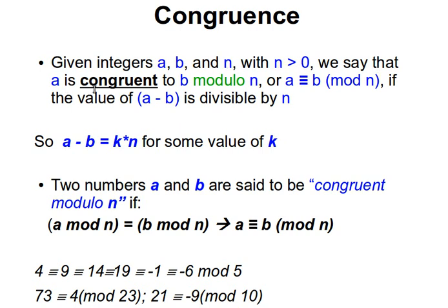We say that a is congruent to b modulo n, remember this. a is congruent to b modulo n, or we use this sort of equivalence symbol. So this reads a is congruent to b in modulo n. If the value of a minus b, if we subtract a minus b, the value, the result of that is divisible by n, i.e. if a minus b is a multiple of n.